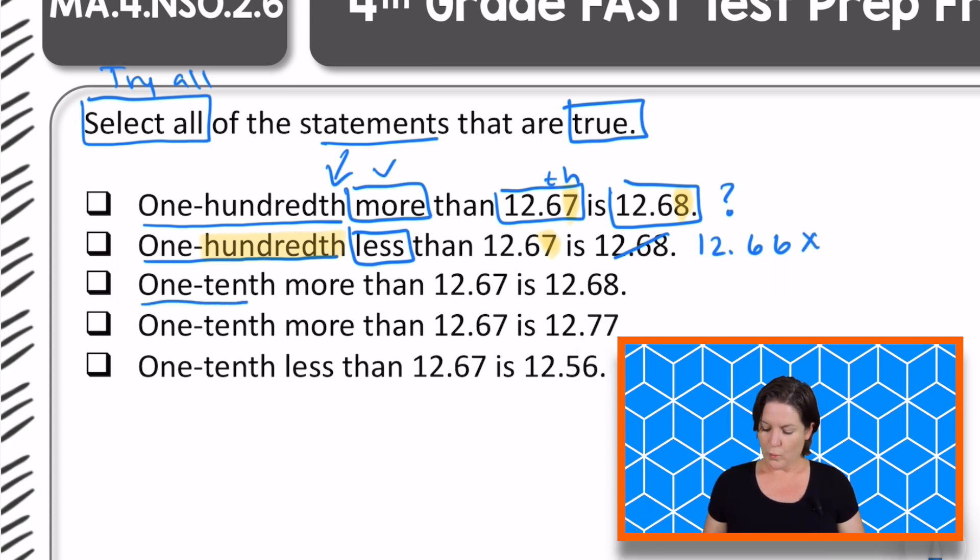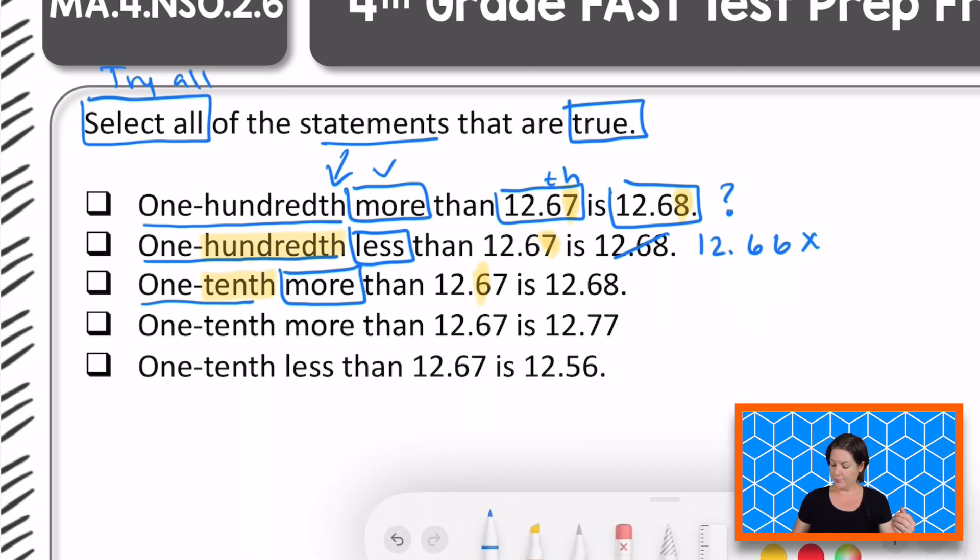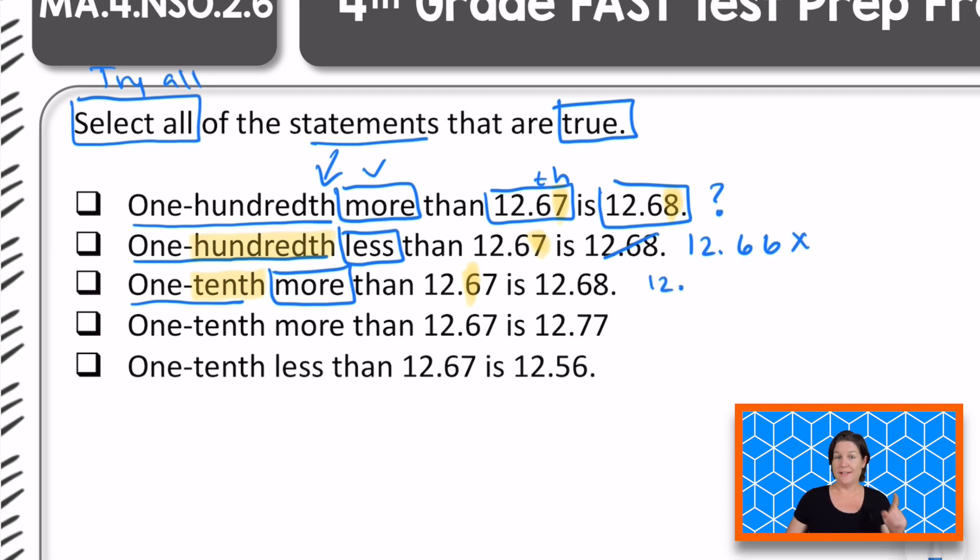The next one: one-tenth more than 12 and 67 hundredths is 12 and 68 hundredths. This time we're considering the tenths place. Which digit is in the tenths place? The six. It should be 12 and 77 hundredths. Is that what we have right here? No. So because of that, do we need to keep it or eliminate this statement? Eliminate.